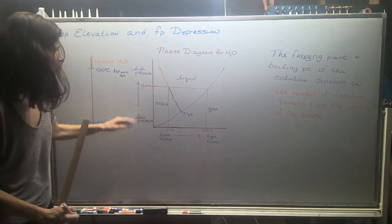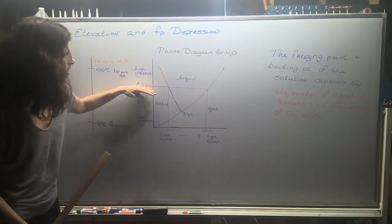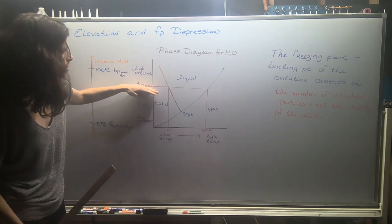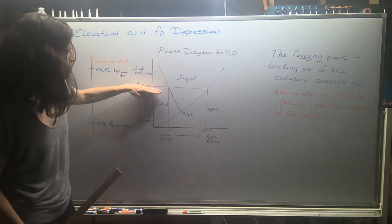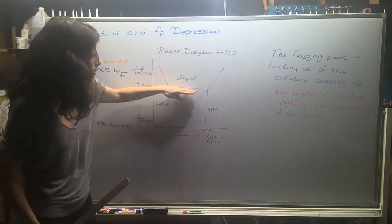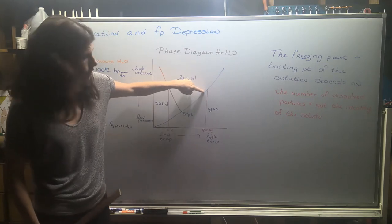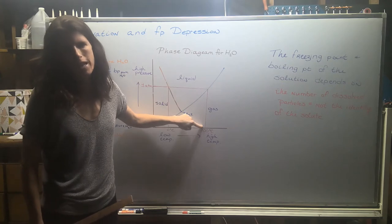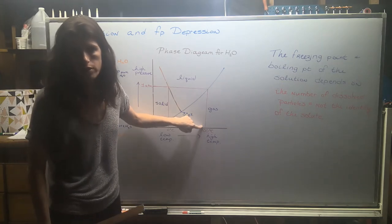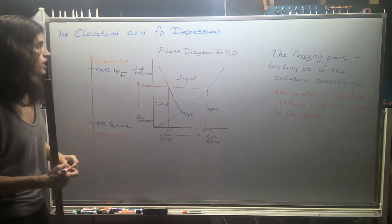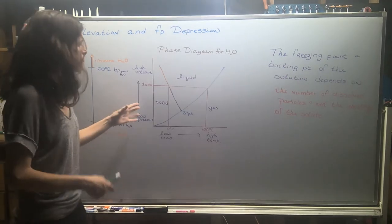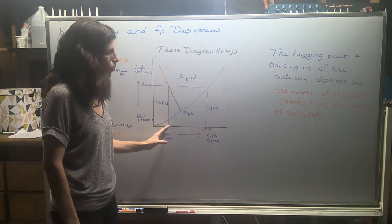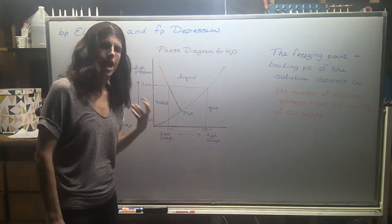So if I'm not at one ATM of pressure, maybe I'm at 0.95 ATMs of pressure, you can see that this line would be a little bit lower and you're going to hit that boundary a little bit sooner. So maybe now your water's boiling at 98 degrees Celsius instead of a hundred degrees Celsius. That's if you experience a change in pressure. So our phase diagrams allow us to calculate our melting points and our boiling points at different pressures.